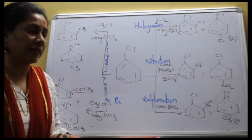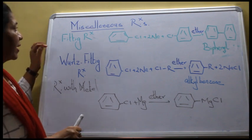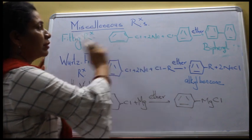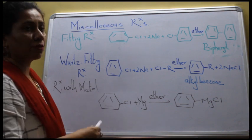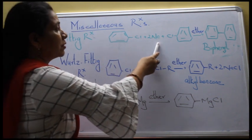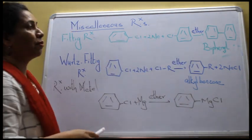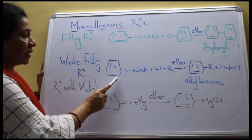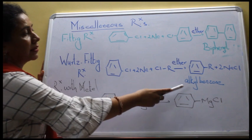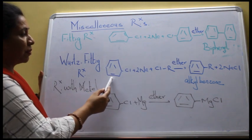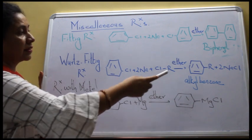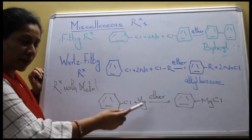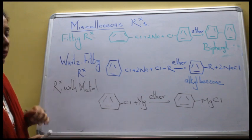In the next slide, we will see miscellaneous reactions of haloarines. First, the Fittig reaction, where we take two haloarines and treat them with sodium in the presence of ether, resulting in formation of higher arenes — for example, chlorobenzene in the presence of sodium gives biphenyl. Second, the Wurtz-Fittig reaction, where we take a haloarene and a haloalkane; for example, chlorobenzene and 1-RCl, resulting in formation of alkyl benzene. Third, reaction with magnesium metal, which results in formation of Grignard reagents.